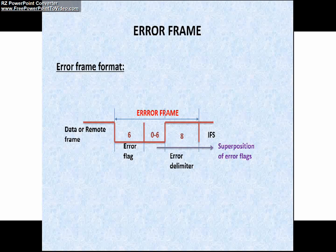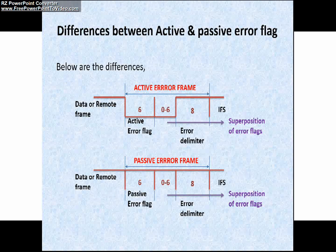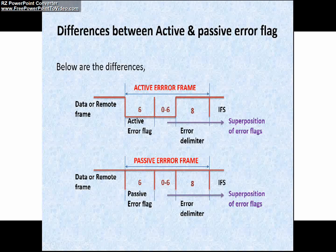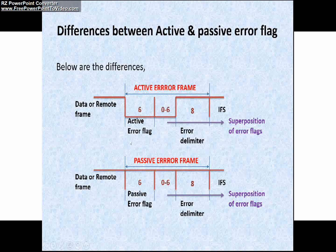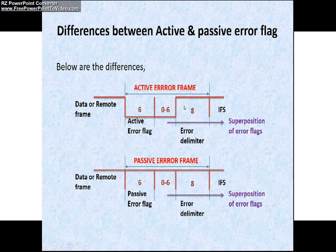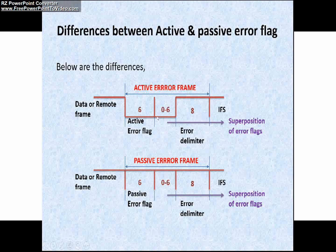Now, let's see what are the differences between active error and passive error flags. Below are the differences. I am showing you in these diagrams. You can clearly see the diagram. The structure of the error frame which is sent by the active node looks like this. You can see here, in previous slide, I have explained about the error flag and when this will be introduced in the CAN network when the active node finds the error in the transmitted message. You can see the structure of the frame. 6 dominant bits. Again, 0 to 6 dominant bit that is superposition of error flags.